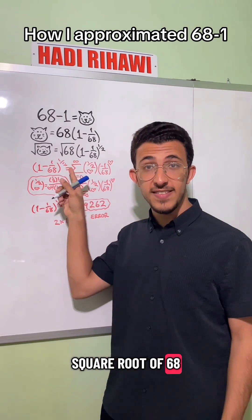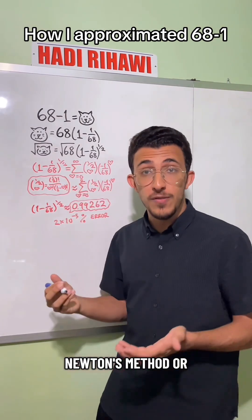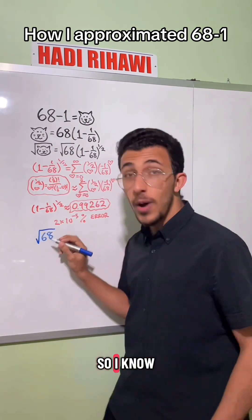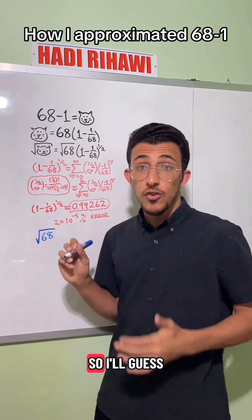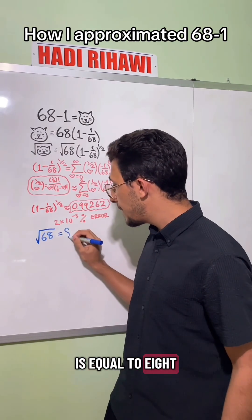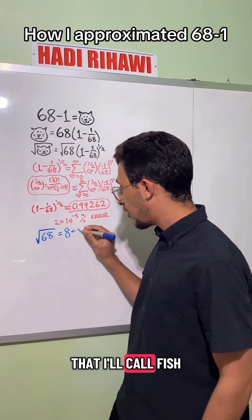Next, I want to compute the square root of 68, and to do that, I use Newton's method, or the Newton-Raphson method. So I know that the square root of 64 is 8, so I'll guess that the square root of 68 is equal to 8 plus some error that I'll call fish.